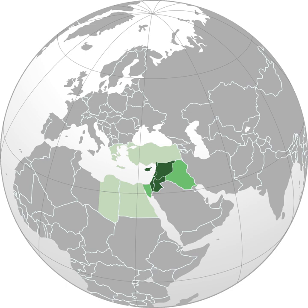Cilicia and the Sinai Peninsula are sometimes included. The term Levant was widely used to describe the region from the 18th to the mid-19th centuries, and has had steady but lower usage since the late 19th century. Several dictionaries consider it to be archaic today.